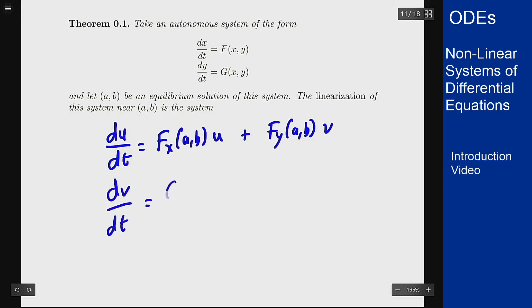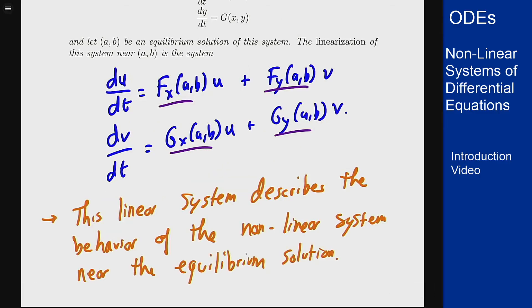These are all numbers, so it's a constant coefficient linear system that's homogeneous. The point is: this linear system describes the behavior of the non-linear system near the equilibrium solution. It gives a replacement for the idea of increasing and decreasing for autonomous equations. Now this system describes how it's going to approach the equilibrium solution—whether it will approach or go away—all that is embedded in this linear system, which we want to solve and analyze to figure out how the non-linear system behaves near that point.